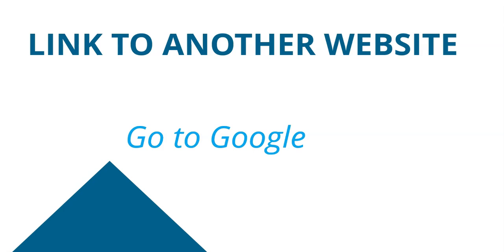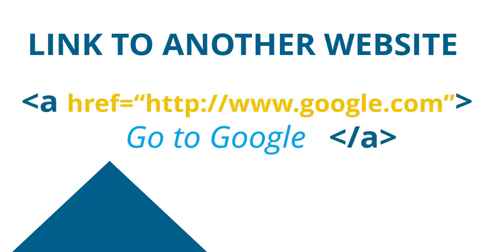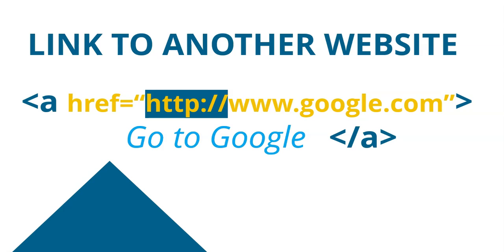If you want to link to Google from your page — a site you didn't create — it's very similar. You put an A tag around your text or image, and you use the href attribute. Inside href, you mention the full URL. When I say full, I mean full — you can't just say 'www' or 'Google'. You need to include 'http://' otherwise it won't work.